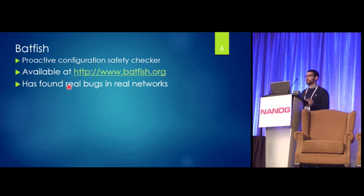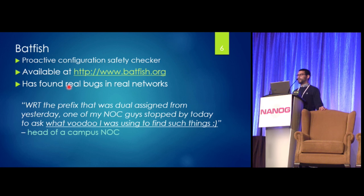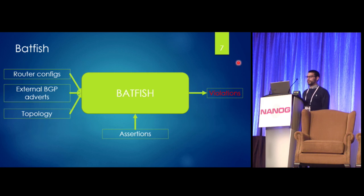So in order to find problems like this, we've developed a tool called Batfish, which is a proactive configuration safety checker. It's available online at http://www.batfish.org. You can take a look after this talk if you wish. And we've used it to find real bugs in real networks. And our favorite quote from one of the operators of the networks that we analyzed is that with respect to the prefix that was dual assigned from yesterday, one of my NOC guys stopped by today to ask what voodoo I was using to find such things. So that was pretty fun.